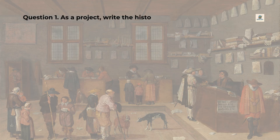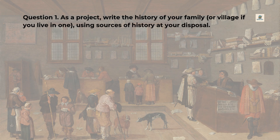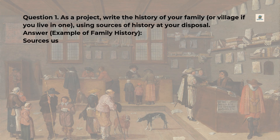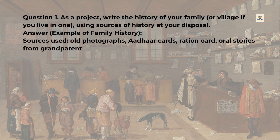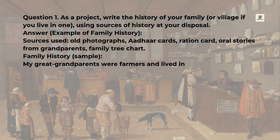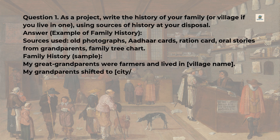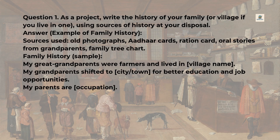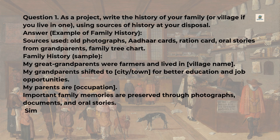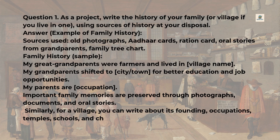Question 1: As a project, write the history of your family or village using sources of history at your disposal. Answer — Example of family history. Sources used: old photographs, Aadhar cards, ration card, oral stories from grandparents, and a family tree chart. My great-grandparents were farmers and lived in a village. My grandparents shifted to a city or town for better education and job opportunities. My parents' occupation is noted. Important family memories are preserved through photographs, documents, and oral stories. Similarly, for a village, you can write about its founding, occupations, temples, schools, and changes over time.